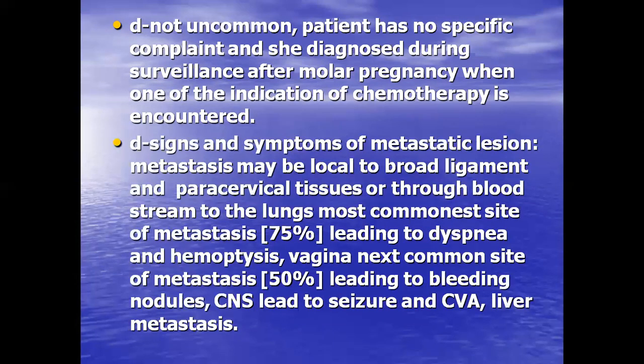Signs and symptoms of metastatic lesion: metastasis may be local to the broad ligament and paracervical tissues, or through the bloodstream to the lungs — the most common site in 75% of cases — causing hemoptysis. The vagina is the next most common site at 50%, leading to bleeding. CNS metastasis leads to seizures and CVA. Liver metastasis also occurs.